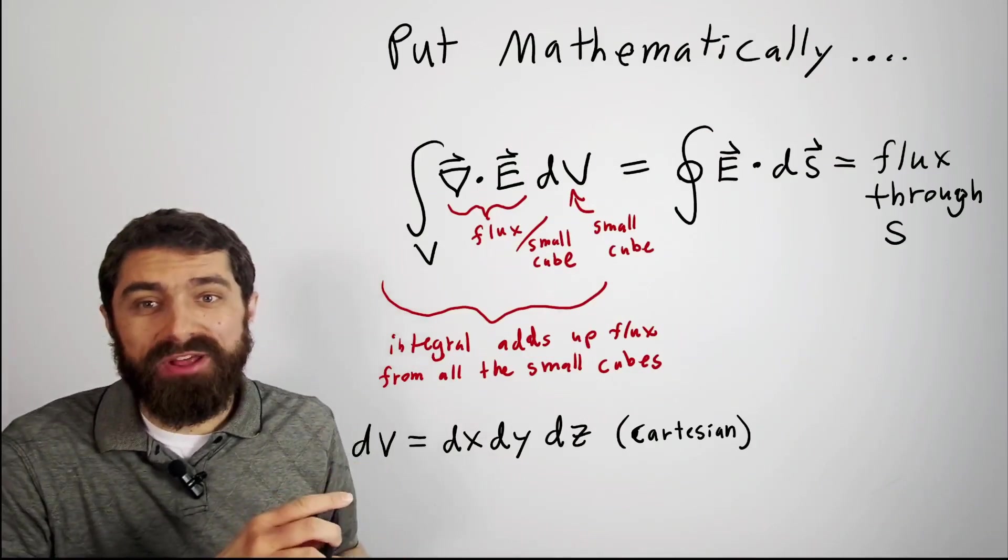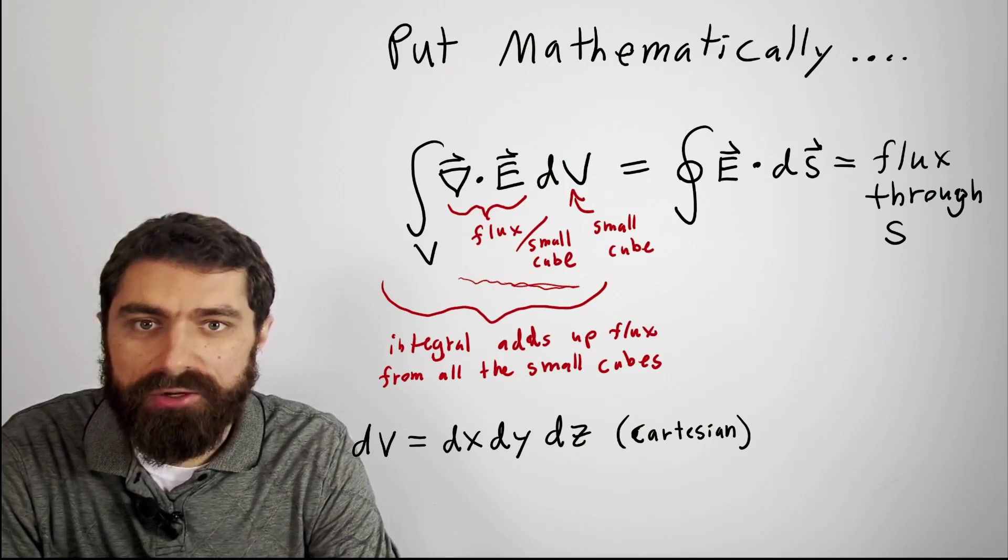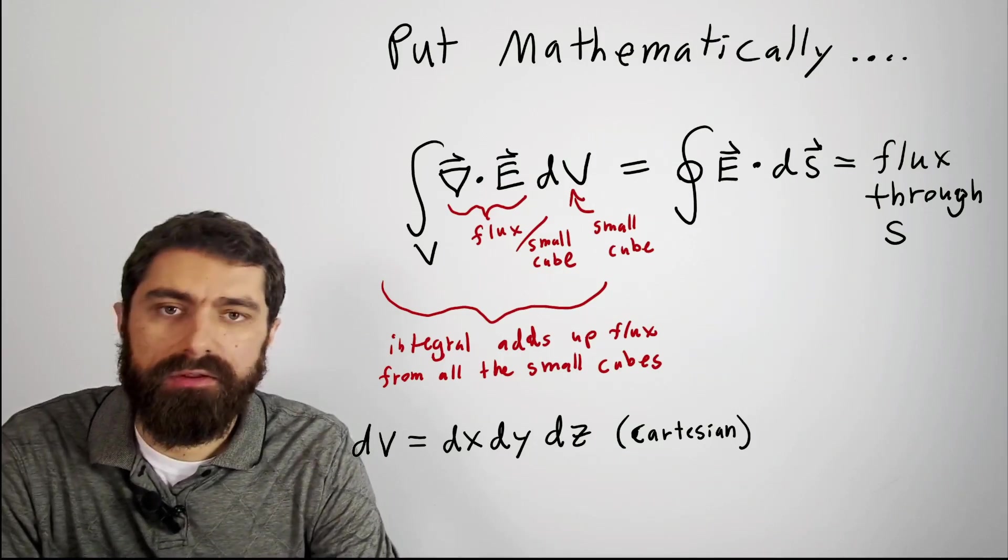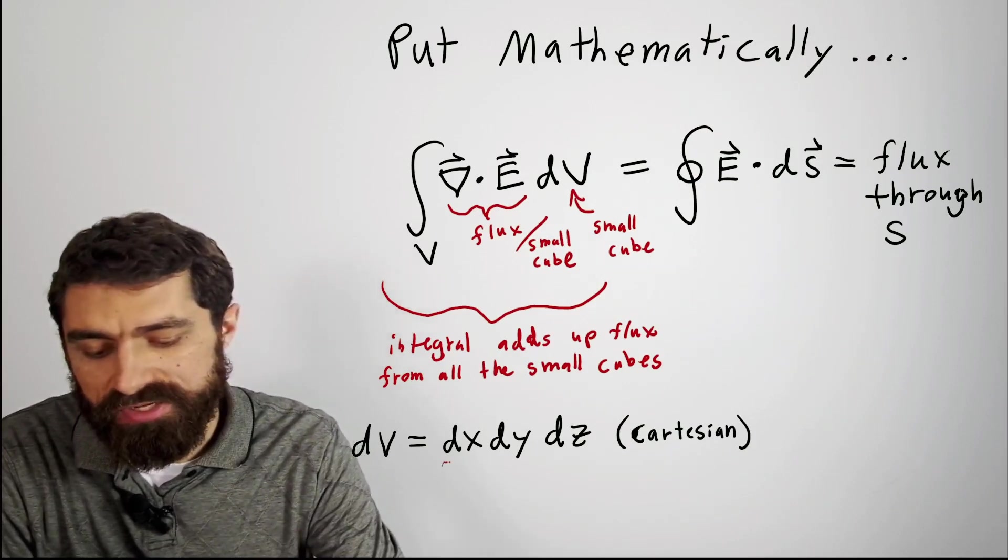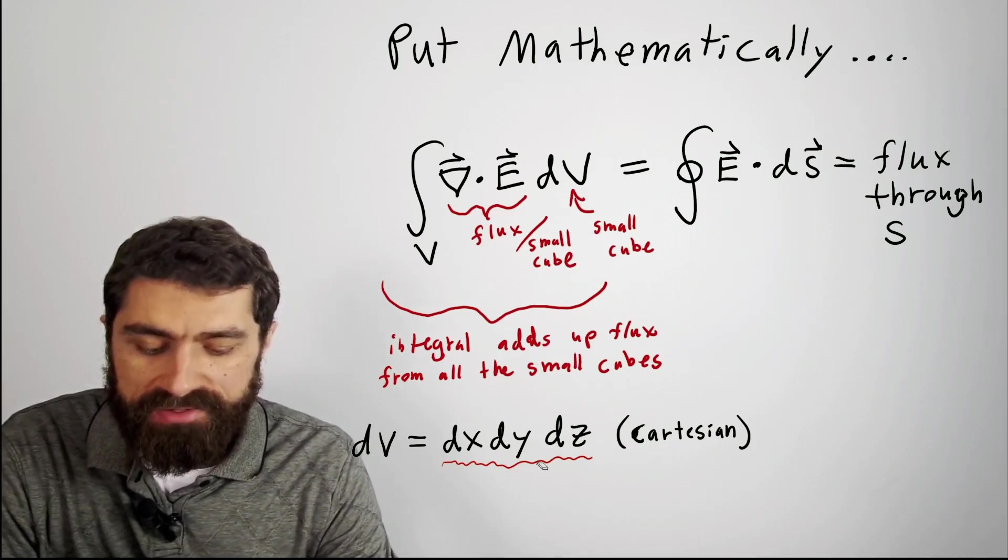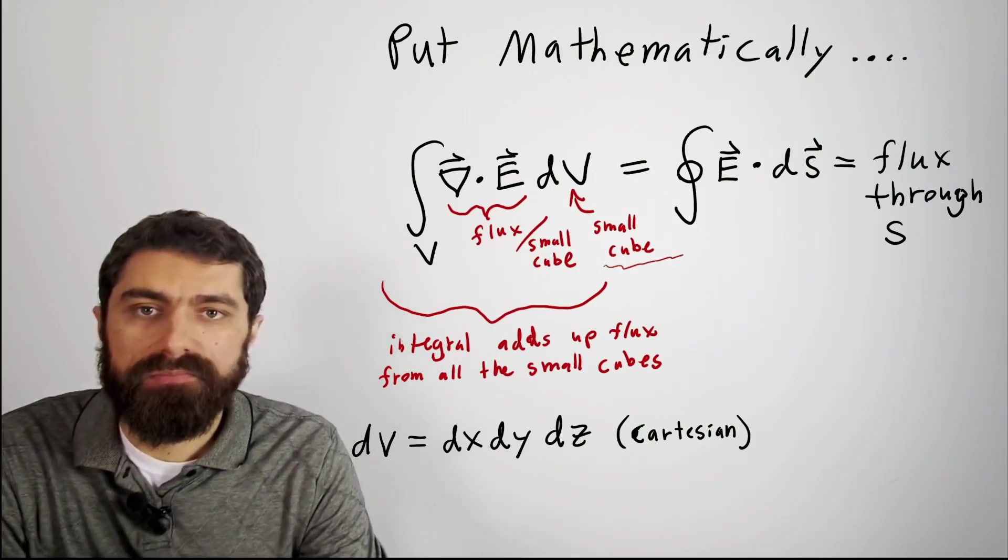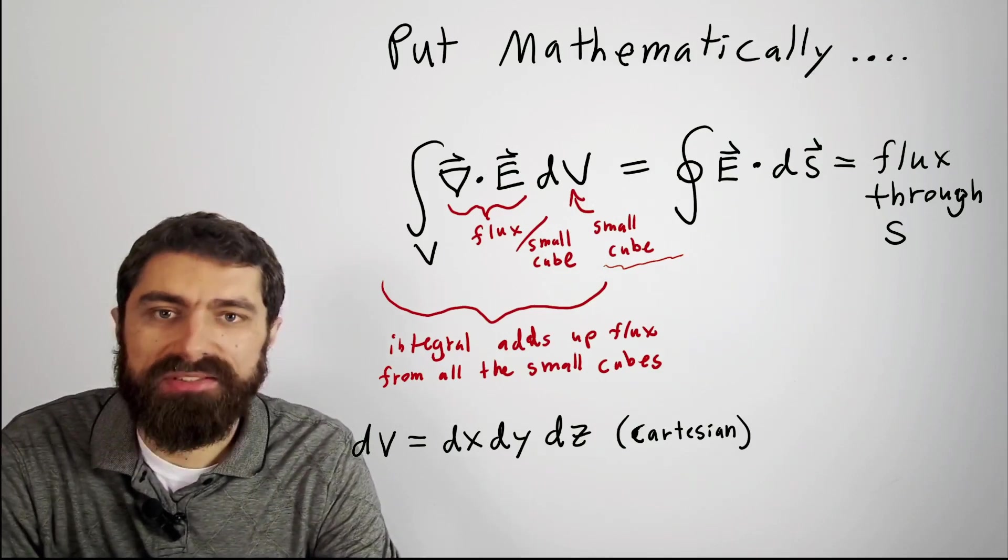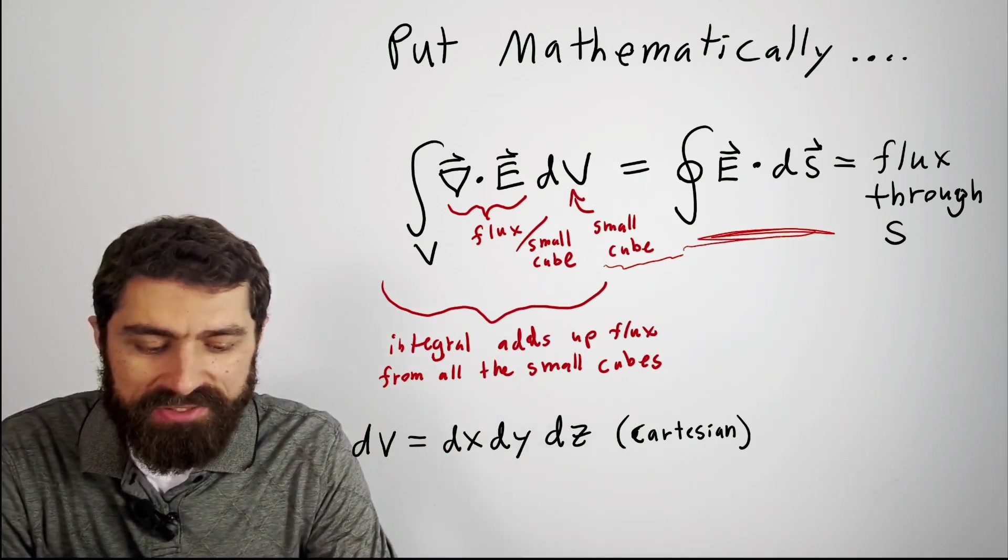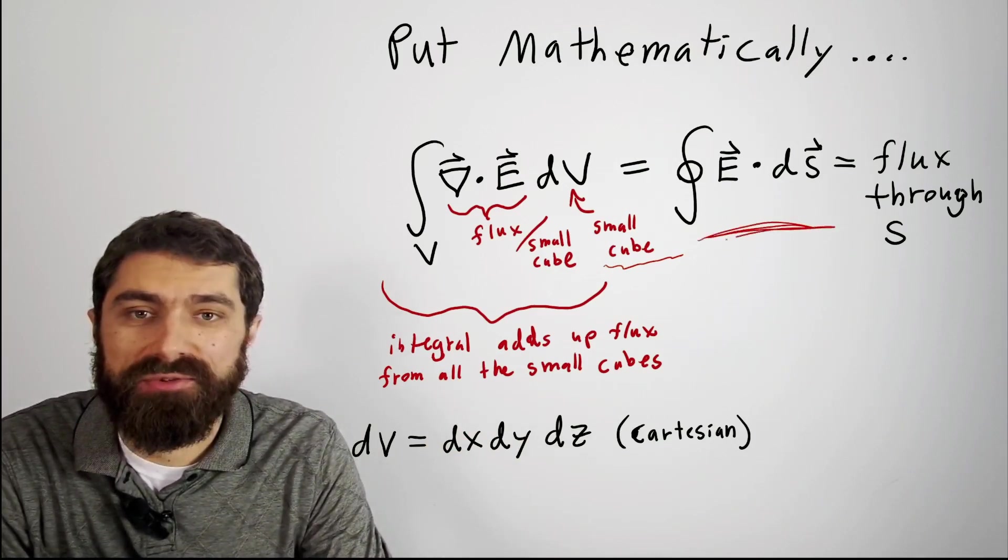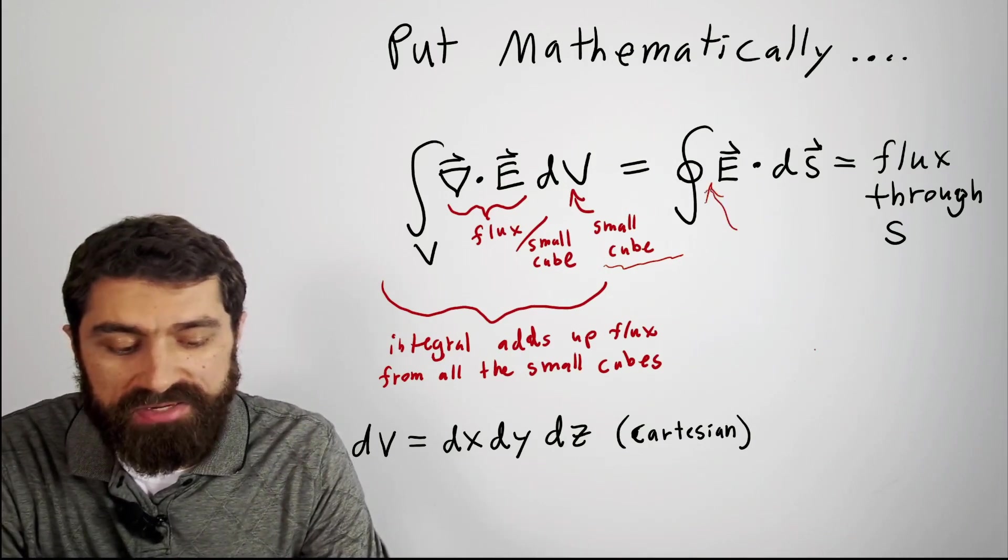Mathematically, the way you could state this is basically you take the divergence, del dot E, and that basically is the flux per small cube, right? And then dV, the differential volume—in Cartesian coordinates that'd just be dx dy dz—that's basically the volume of your little cube there. So if you integrate this and basically add up the flux from all the little cubes in the volume, then you will get the total flux through that enclosed surface. And this little symbol here, by the way, that little circle symbol just means that we have a closed surface.